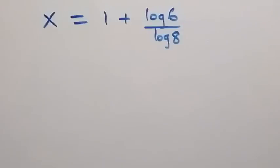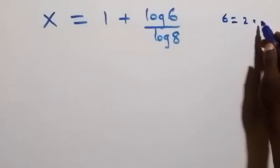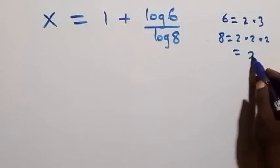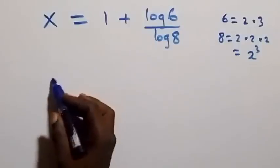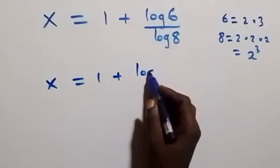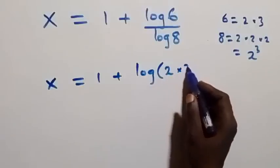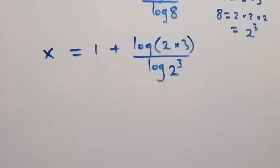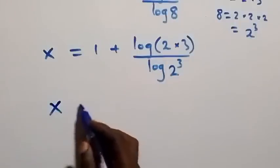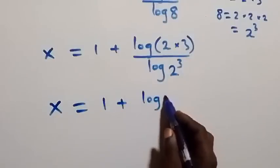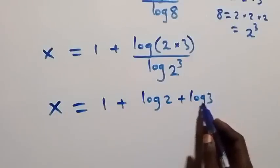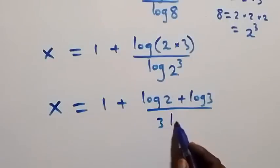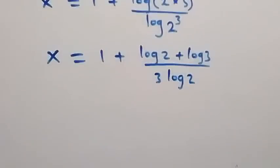From here, 6 can be written as 2 times 3, and 8 can be written as 2 times 2 times 2, which is 2 raised to power 3. So x equals 1 plus log of bracket 2 times 3, divided by log of 2 raised to power 3. Following the log product rule, we get x equals 1 plus log 2 plus log 3, divided by 3 log 2.